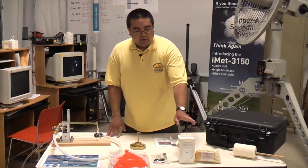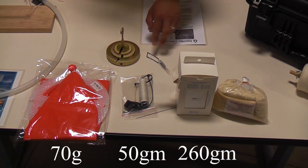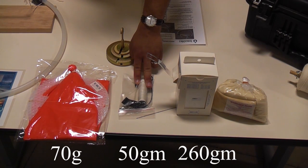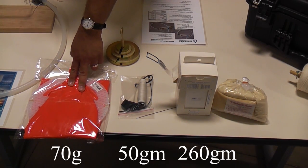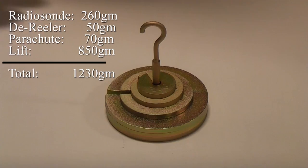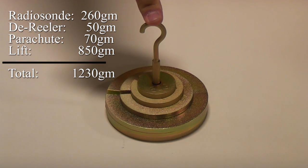For this flight, we have an IMet-1 radiosonde, which weighs approximately 260 grams, a derailleur, which weighs approximately 50 grams, and a parachute, which weighs approximately 70 grams. Adding up all these components, and 850 grams to start with, we come up with 1,230 grams of lift.